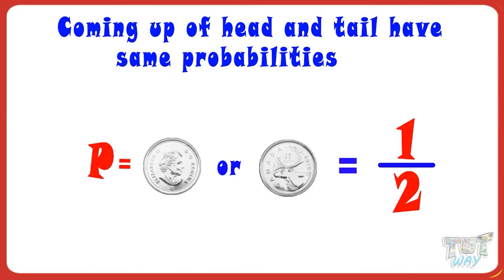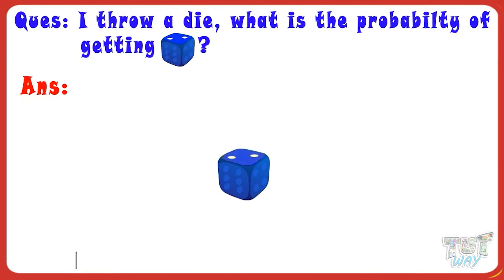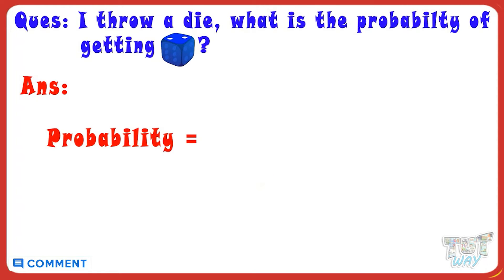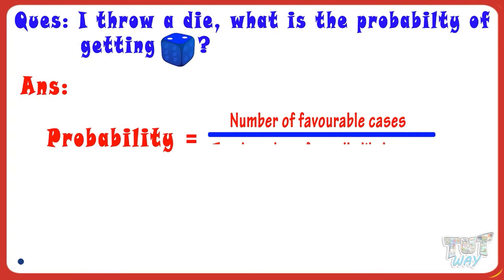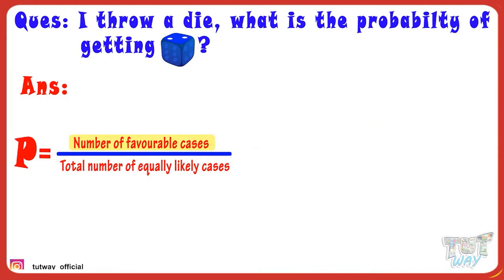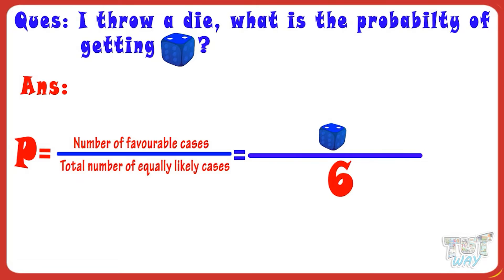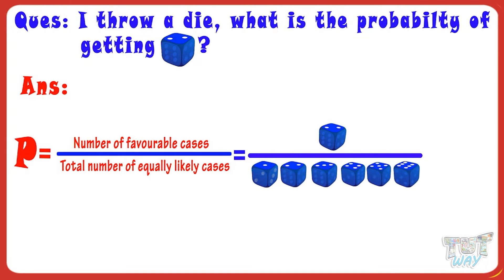Now, let's take another example. If I toss a dice, what is the probability of getting two? We know probability is number of favorable cases divided by total number of equally likely cases. The number of favorable cases here is one — that is, getting two on the dice. And the total number of cases are six. We know six cases are possible in a dice, that is, numbers one to six. So, probability is one by six.